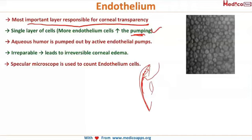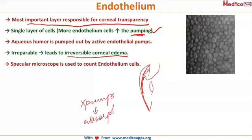Once damaged, if the endothelium is damaged for any reason, it is irreparable. This leads to irreversible corneal edema — because the endothelium is damaged, the pumps are not functioning, causing absorption of aqueous humor and resulting in irreversible corneal edema.